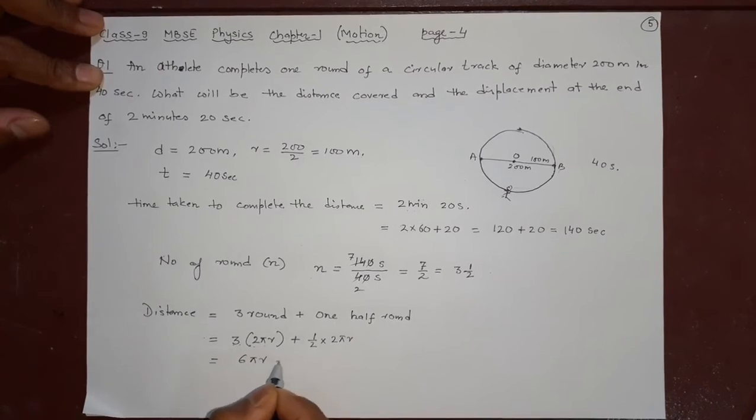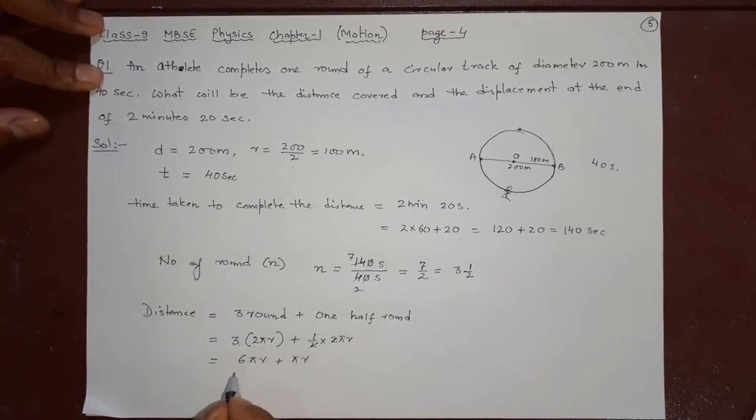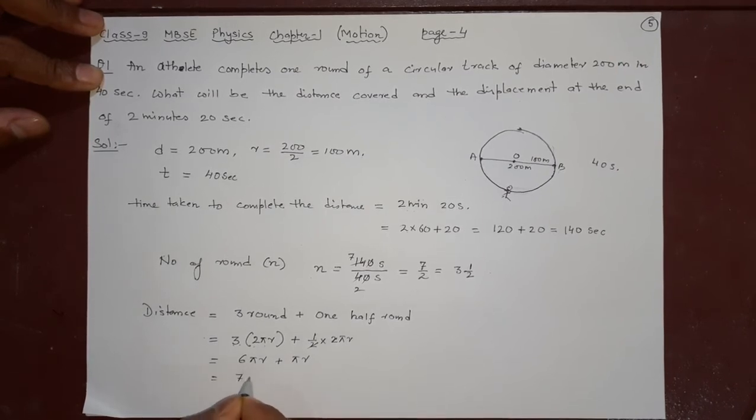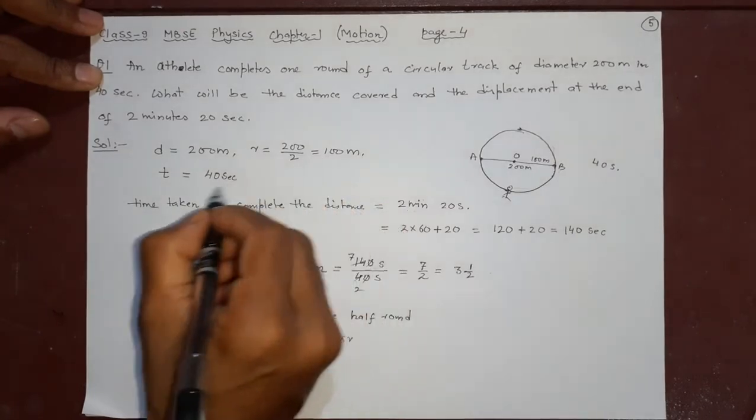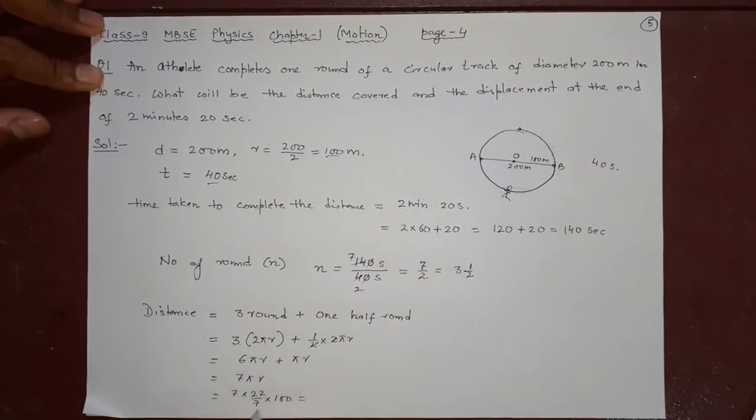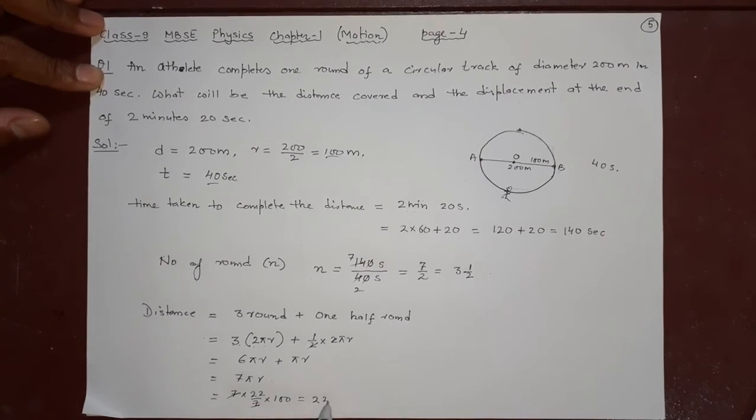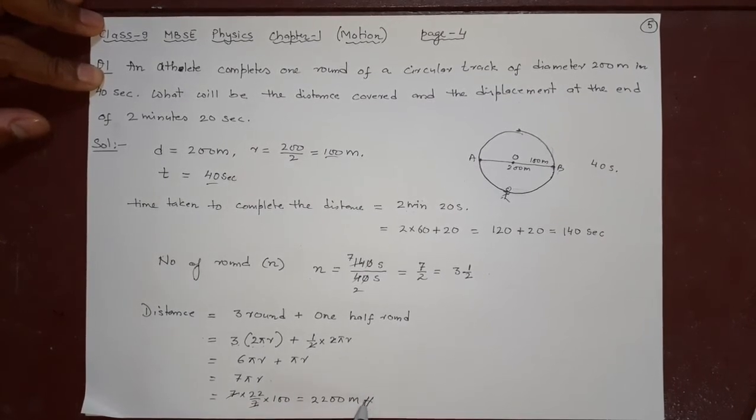6 pi r plus, cancel it, pi r. What will be the total? It will be 7 pi r. You can write it 7 into 22 by 7 into what is the value of r? 100. 2,200 meters. So this is your distance.